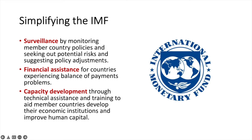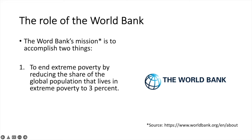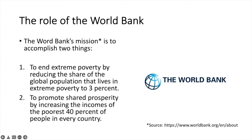Now let's take a look at the World Bank. The World Bank's mission is to accomplish two things: first, to end extreme poverty by reducing the share of the global population that lives in extreme poverty to 3%; and second, to promote shared prosperity by increasing the incomes of the poorest 40% of people in every country. The World Bank aims to accomplish these goals through long-term lending and technical assistance to lower and middle-income countries. The focus of the support is generally on health, education, access to clean water and electricity, and environmental protection.